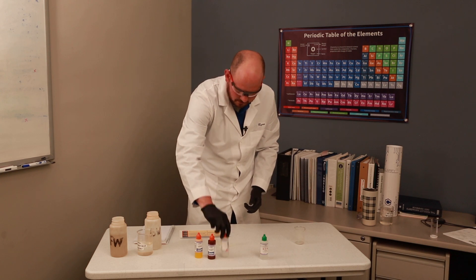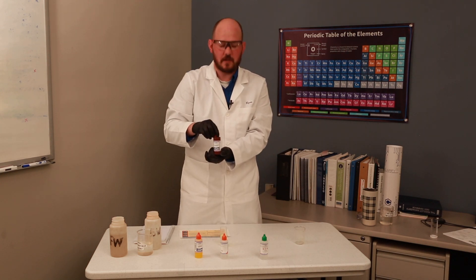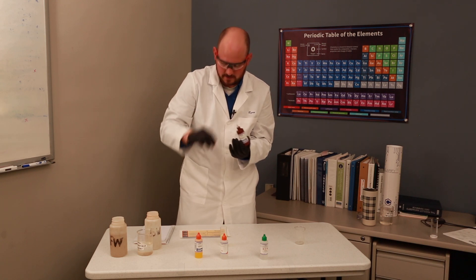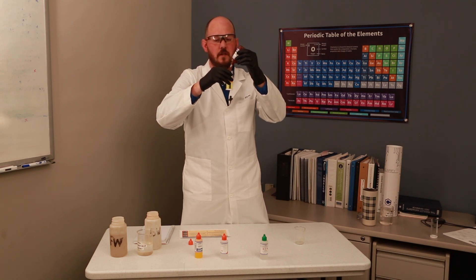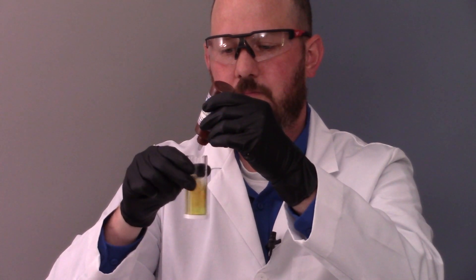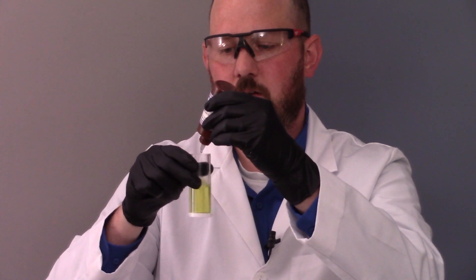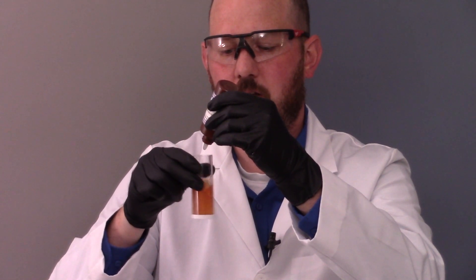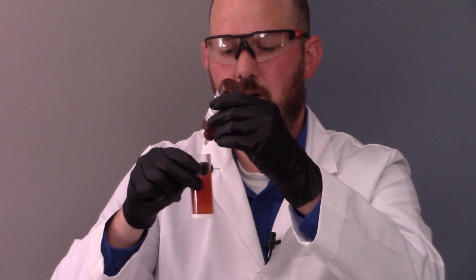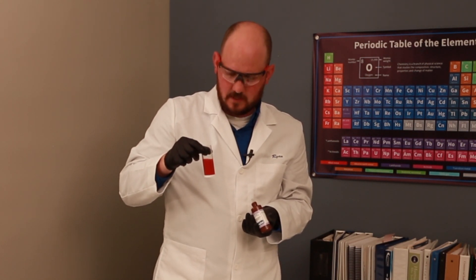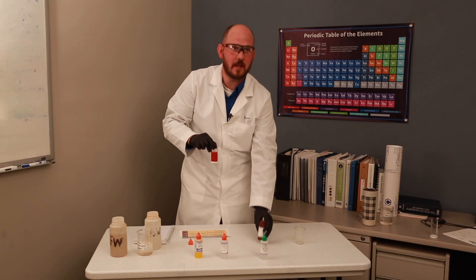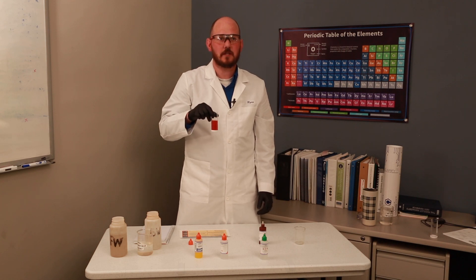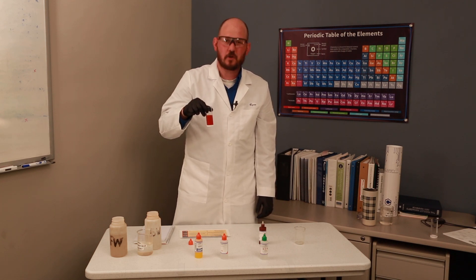To get it to change, we're going to use a silver nitrate reagent, adding dropwise and counting as we go. Four drops total. As you can see, it's a tinted brownish red color, very murky. Knowing that I had four drops, I'm going to multiply that by 10 ppm. So in this water sample, I have 40 ppm of chloride.